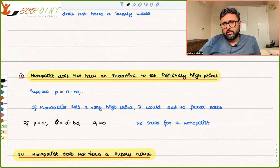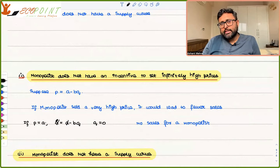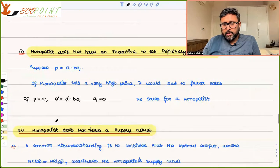So it's not that monopolist can also set, because he's the only supplier in the market, he can set whatever price he wants. No, he can't.